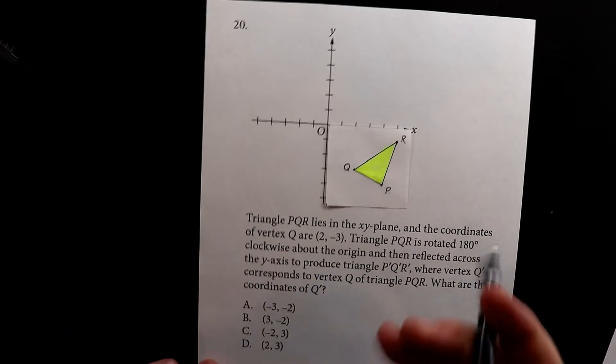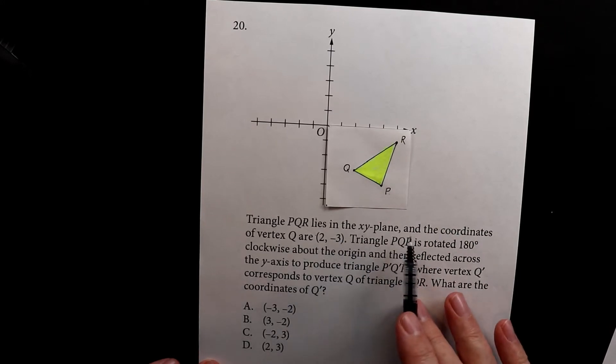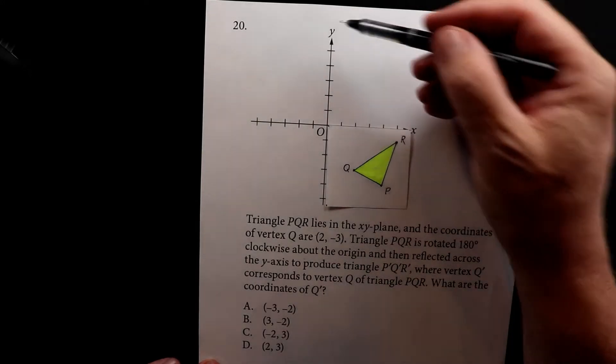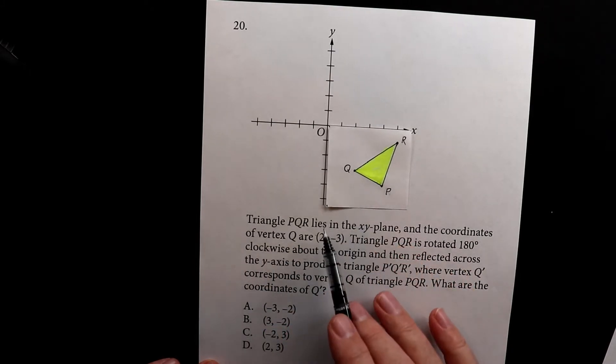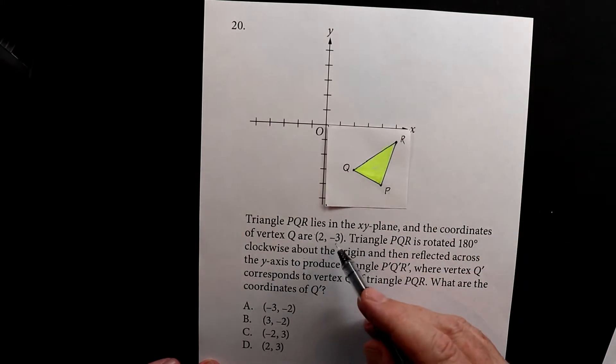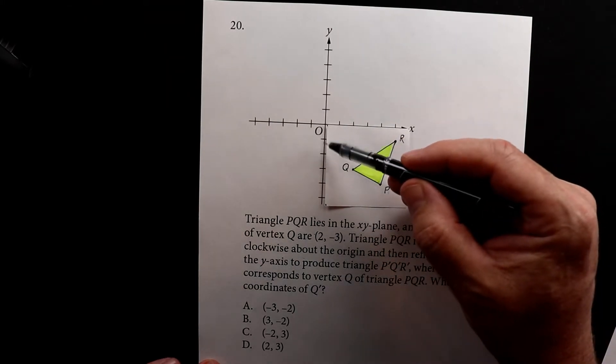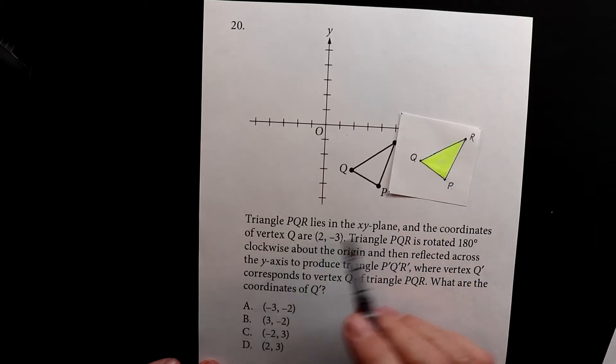A triangle PQR lies in the XY plane, and the coordinates of vertex Q, that's this one, are positive 2—look, 1, 2—and then the Y is negative 3. Negative 1, negative 2, negative 3. So that's the coordinates for this point.